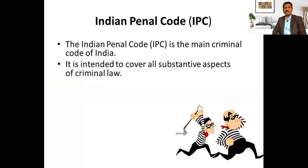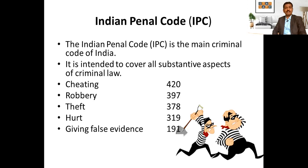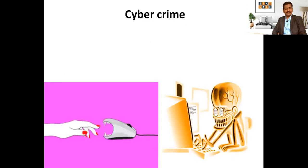The IPC is the main criminal code of India and is intended to cover all substantive aspects of criminal law. Cheating is IPC code 420, robbery is 397, theft is 378, hurt is 319. Giving false evidence is also a crime, with IPC code 191. Attempt to commit suicide is IPC code 309. Now let us see what is cybercrime.